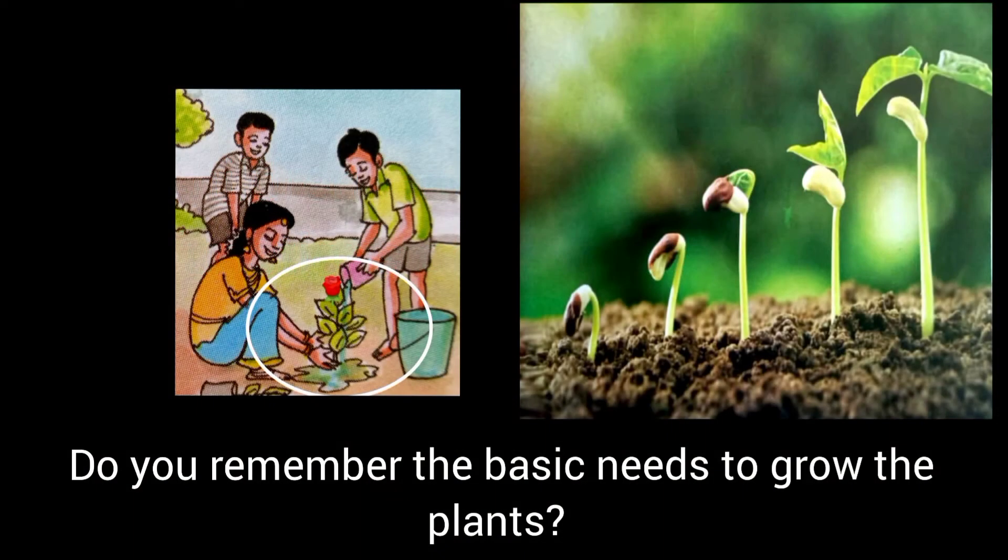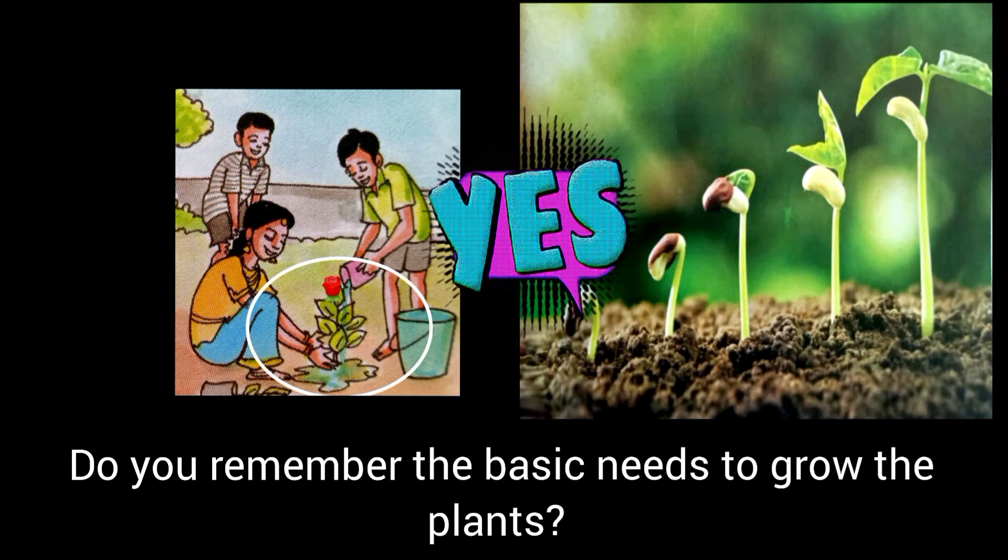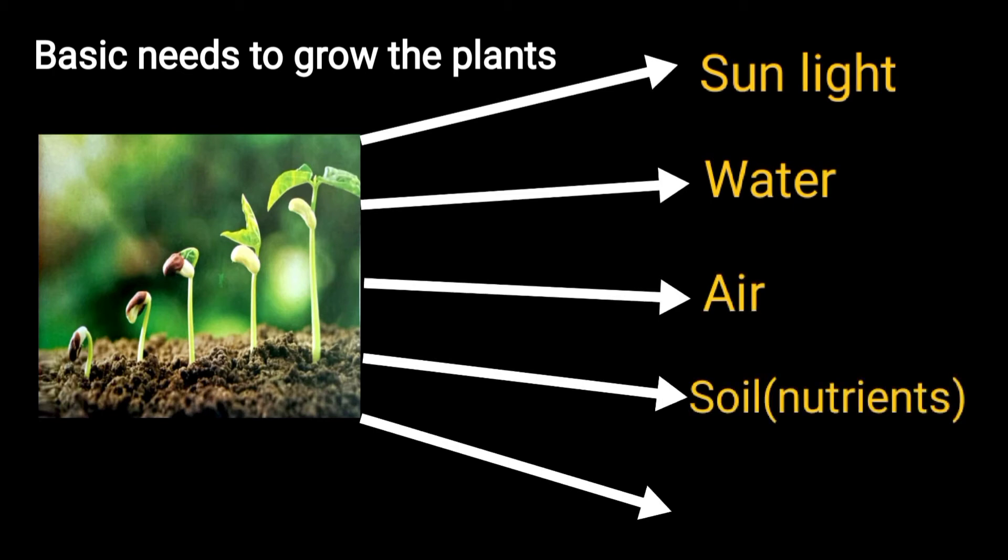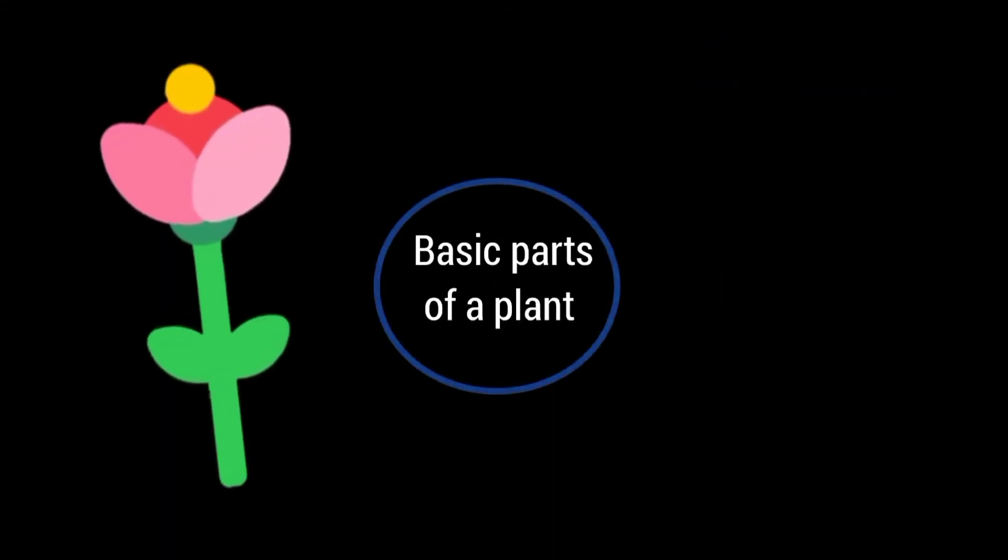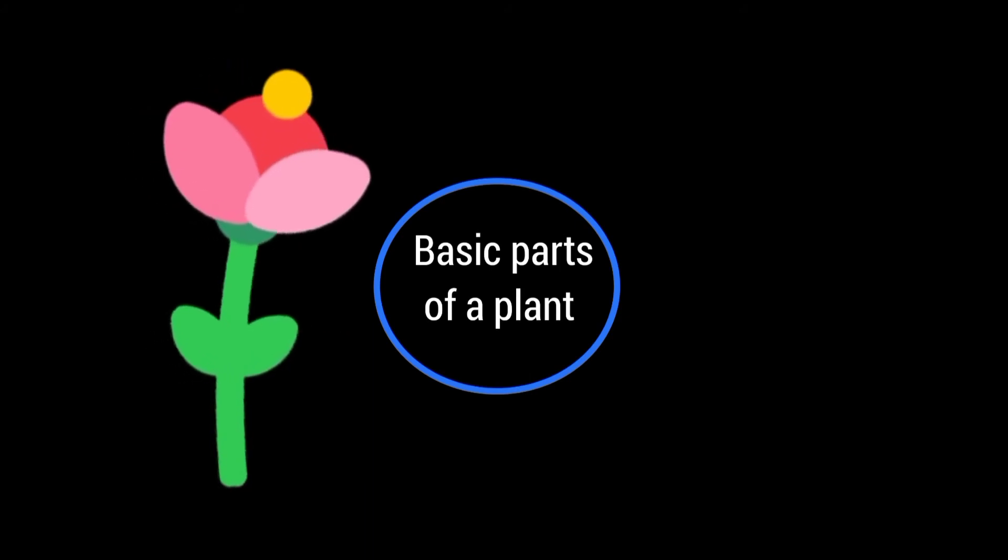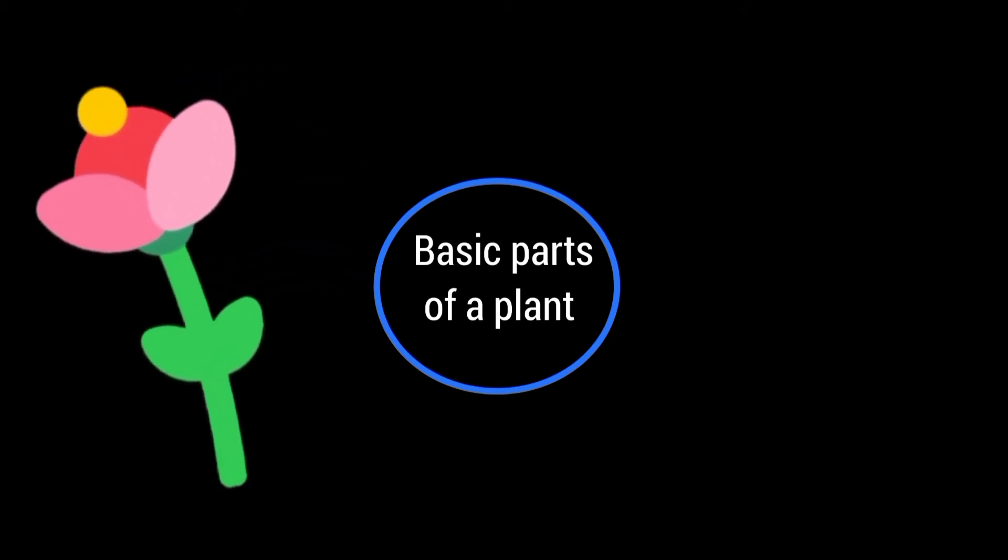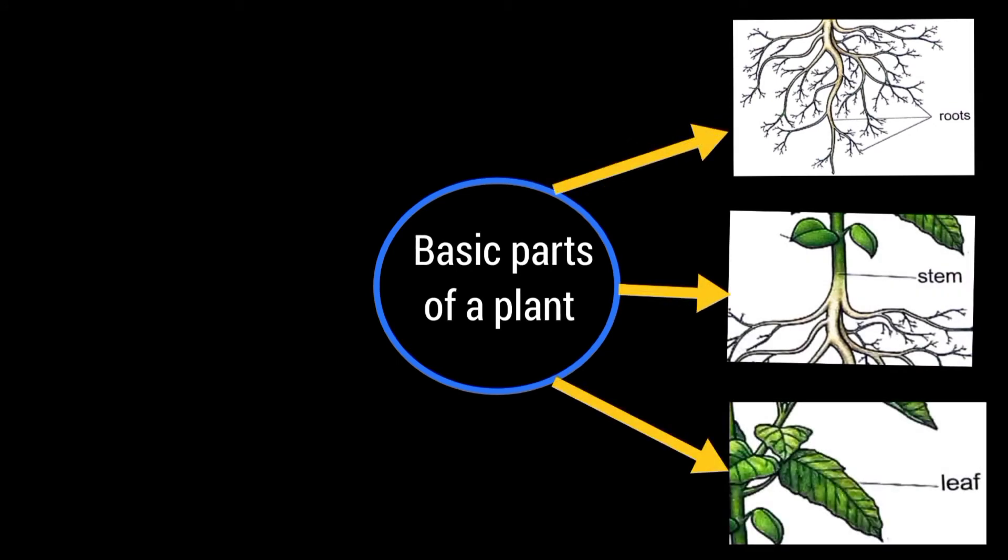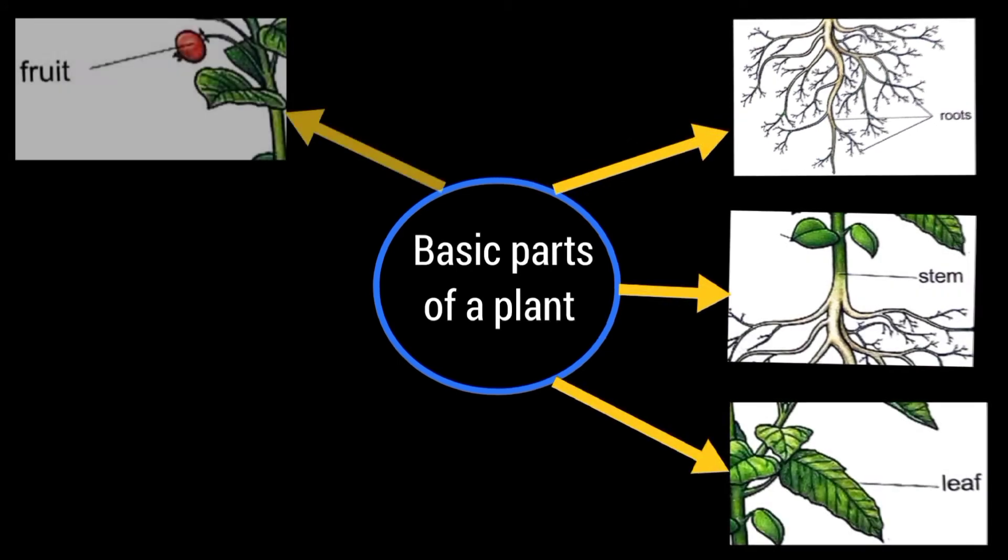Children, do you remember the five basic needs to grow the plants? Yes, now let us recall. Plants need sunlight, water, air, soil, and temperature. Children, now we recall the names of the basic parts of a plant: root, stem, leaf, fruit, flower, and seeds.